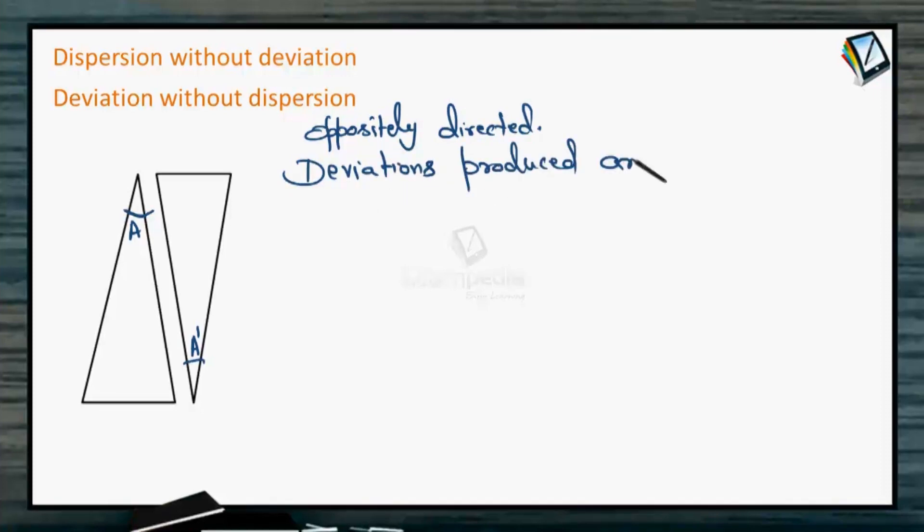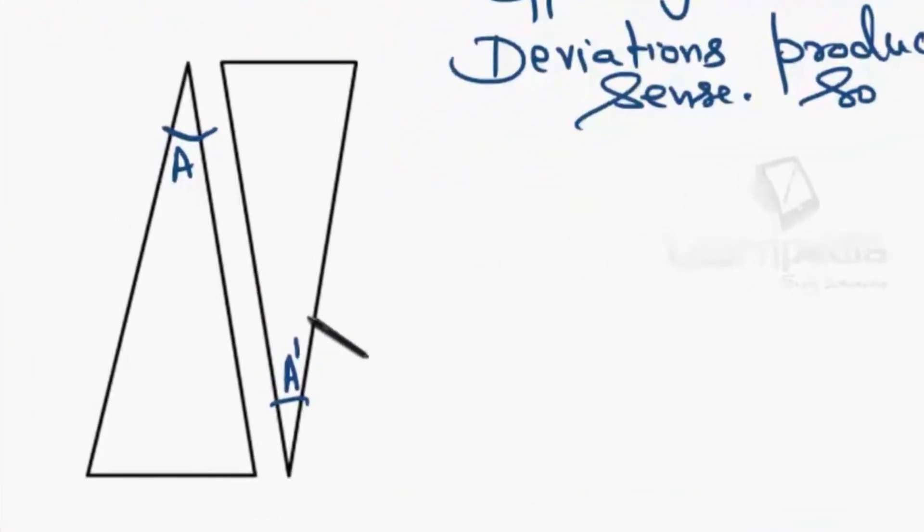So their deviations are along opposite sense. Deviations produced are along opposite sense. So net deviation will be the subtraction of the two. Net deviation would be basically δ₁ minus δ₂, the deviation produced by one prism minus the deviation produced by the second prism. And this will be applicable for all the color components in these two deviations. Light ray is incident, then it deviates and then again deviates from this prism and comes out. Both deviations produced are along opposite sense, so overall deviation is reduced.